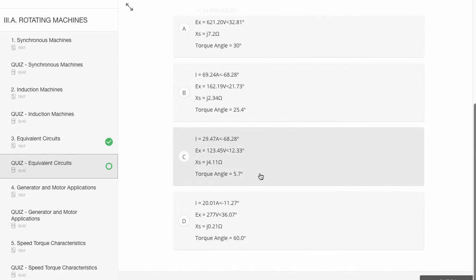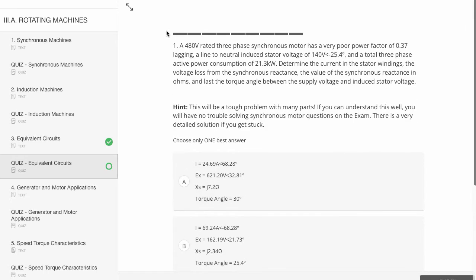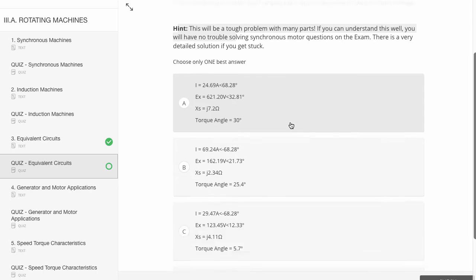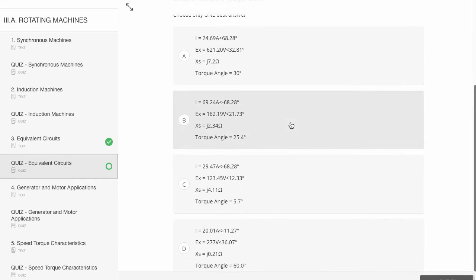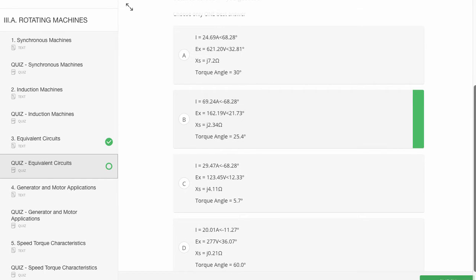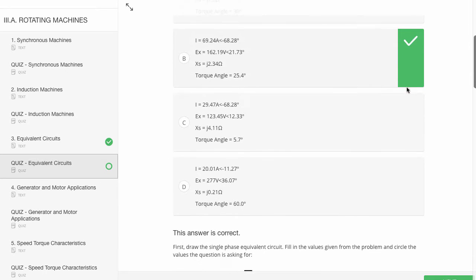You'll notice there's four separate answers. You've got the problem statement up top. Some of them will have hints. And then when you're ready, once you've worked it out with pen and paper, we'll say B, you click check and wow, got it right. Random guess.